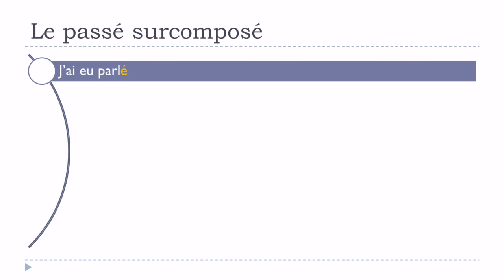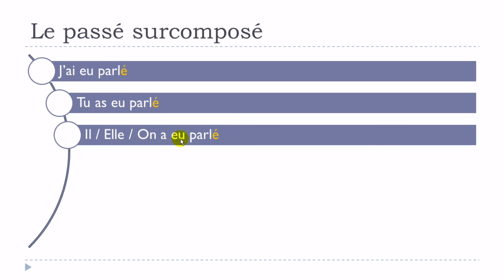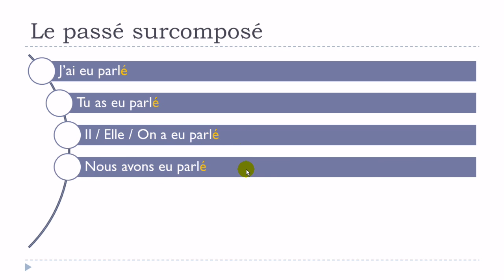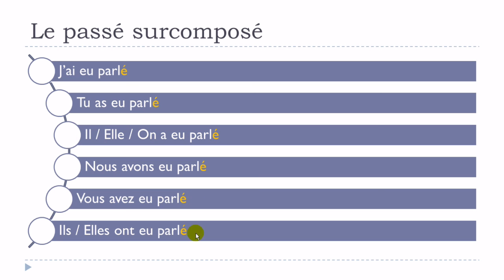Let's conjugate parler at the passé surcomposé. Remember: avoir at the passé composé, then the participe passé. J'ai eu parlé, tu as eu parlé, il/elle/on a eu parlé, nous avons eu parlé, vous avez eu parlé, ils/elles ont eu parlé. Since we're constructing this with avoir, we keep the -é ending at all times — no feminine or plural marks on the participe passé.